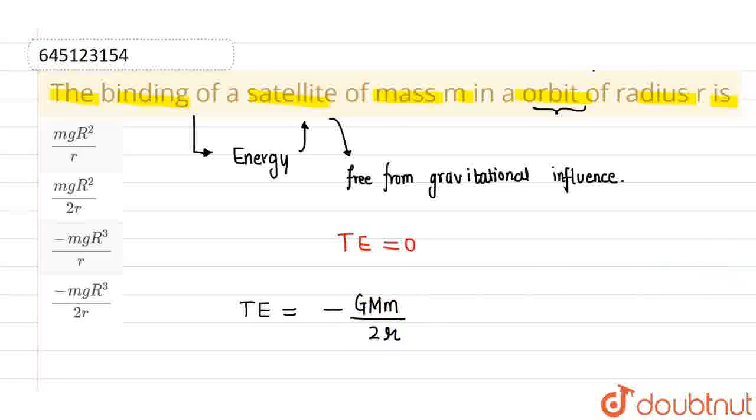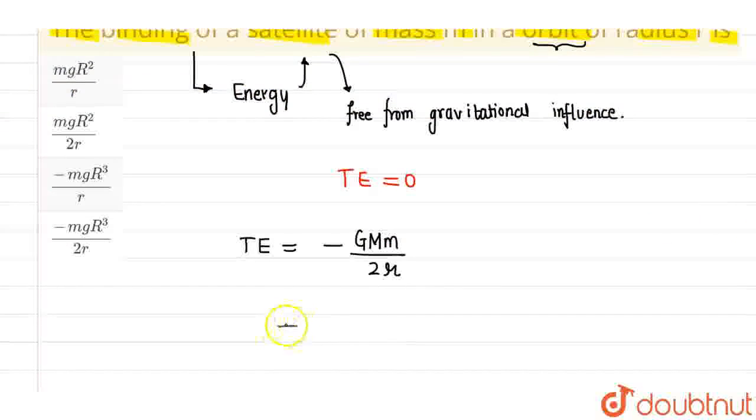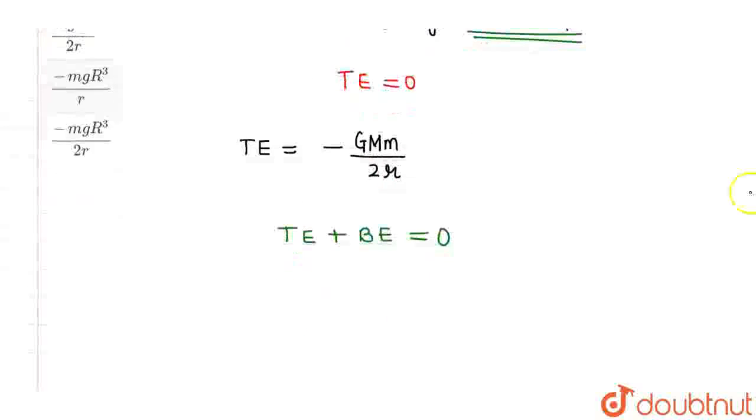In the total energy, let me add binding energy so that the total energy becomes zero. If the total energy becomes zero, then the satellite will be free from gravitational influence.